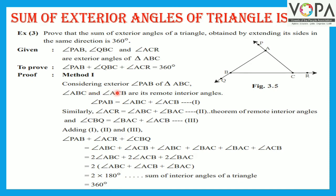Now, we will consider exterior angle PAB of triangle ABC. For exterior angle PAB, angle ABC and angle ACB are its remote interior angles. You have learnt the theorem of remote interior angles: the measure of an exterior angle is equal to the sum of its remote interior angles. Therefore, angle PAB is equal to angle ABC plus angle ACB — statement number 1.